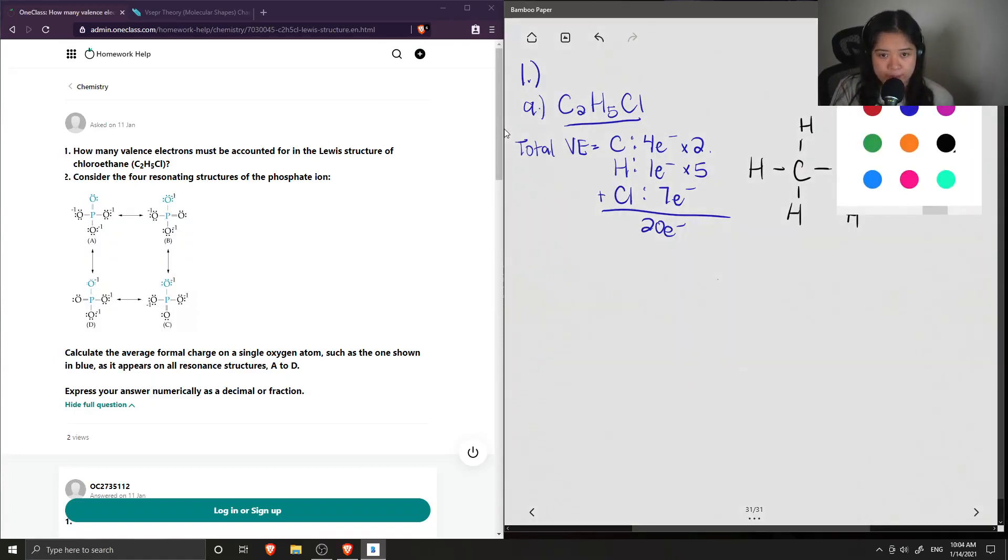Plus the six valence electrons on the chlorine gives us our total valence electrons of 20. So that is part A. So now let's look at part B. They have four resonance structures of phosphate, and we want to calculate the average formal charge on just one of the single oxygen atoms, like the one in blue, as it appears on all of the resonance structures.